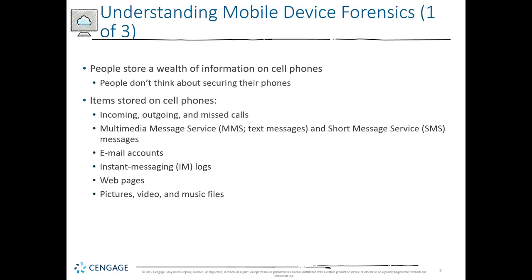The first thing we need to understand is what's a mobile device. Typically we think tablet or a mobile phone, and both of those work for this definition. Because people store a wealth of information on their mobile devices — tablets and cell phones — people don't think about securing those devices. Items stored typically on these mobile devices include calls, call logs, SMS or multimedia messages, email accounts, bank accounts, any type of instant messaging, logs that are not SMS, web content, all web browsers, pictures, videos, music, as well as all other app data from third-party or native apps.